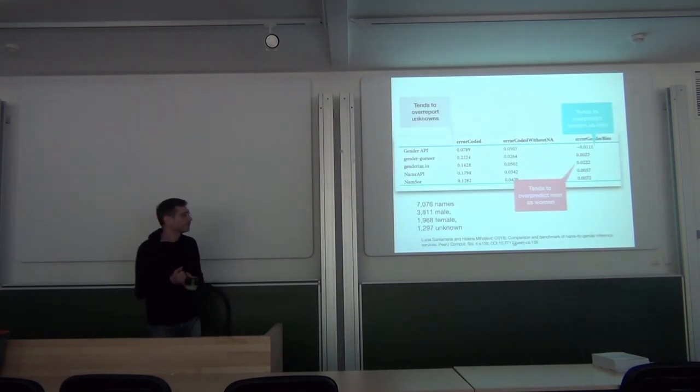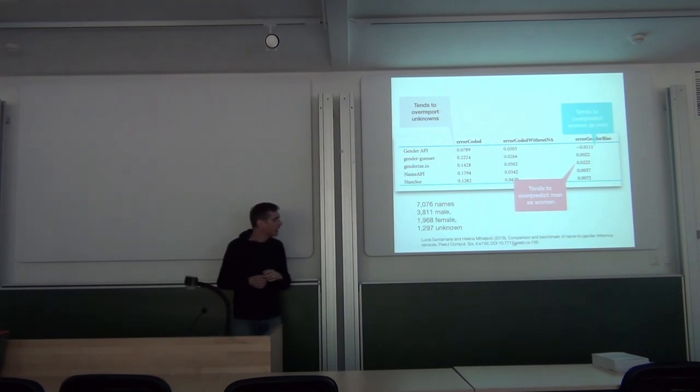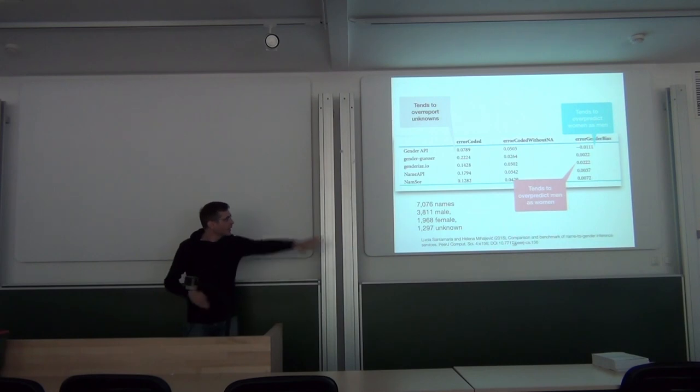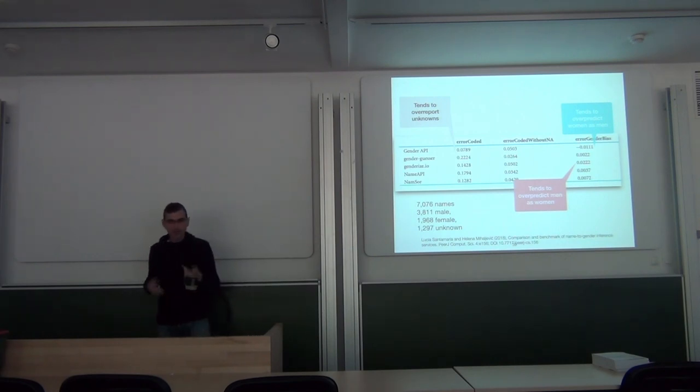When it comes to quality, there was a recent study by Santamaria and Mihaljević which was based on author names from scientific papers. They have applied several of those name-to-gender tools and evaluated them in terms of their behavior. You see, for instance, the Gender Guesser tends to over-report unknowns. It tends to give up more often than other tools. While Gender API and GenderArts.io tend to over-predict men as women and women as men. It is based on 7,000 names. So Namsor, which we looked at on the previous slide, seems to perform quite reasonably.